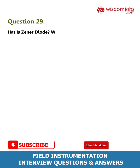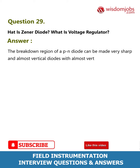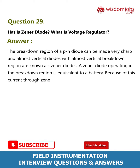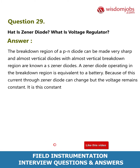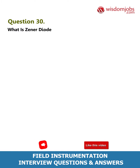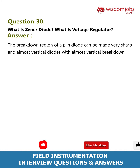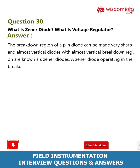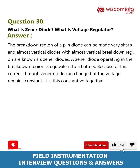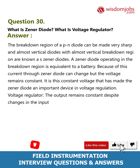Question 29: What is a Zener diode? What is a voltage regulator? Answer: The breakdown region of a PN diode can be made very sharp and almost vertical. Diodes with an almost vertical breakdown region are known as Zener diodes. A Zener diode operating in the breakdown region is equivalent to a battery; the current through the Zener diode can change but the voltage remains constant. This constant voltage makes the Zener diode an important device in voltage regulation, where the output remains constant despite changes in input voltage due to the Zener effect.